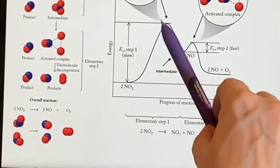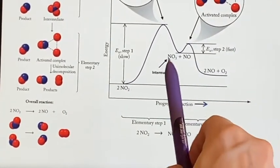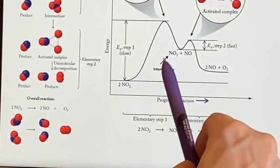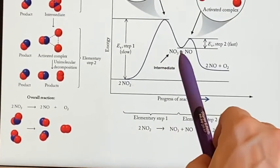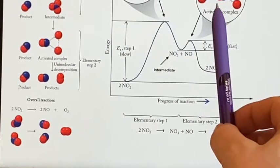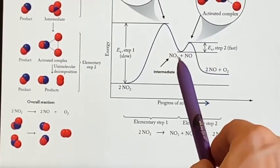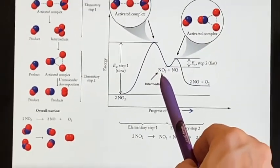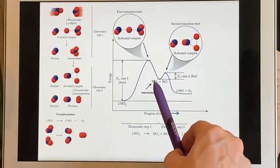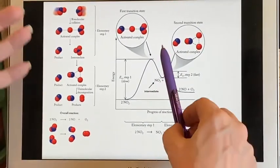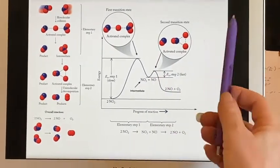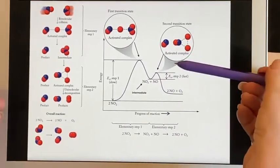So if you had a situation where you all of a sudden, for some reason, noticed an intermediate, that would give you a good indication that you were trying to find out that there was more than one step. And then you would have to say, okay, well, if I know that is in existence, maybe I should modify my mechanism to make sure it gets created and then used up. And that would help you create your elementary steps properly.